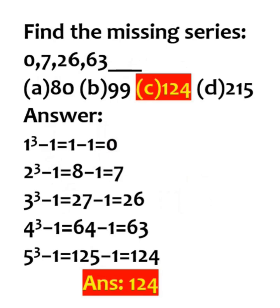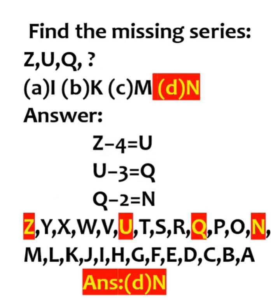Next series: 0, 7, 26, 63. All these are perfect cube minus 1. So, 4 cube minus 1 is 63. 5 cube is 125, and 125 minus 1 is 124. The answer for this question is 124.